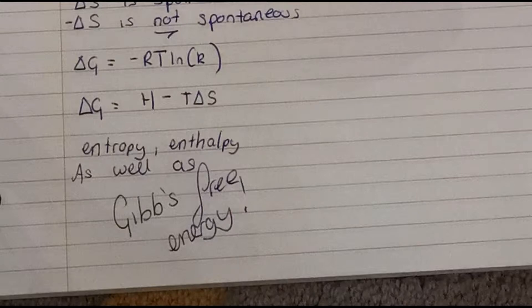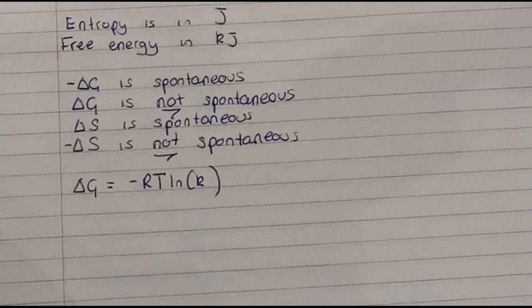Entropy is in J, free energy JK. Minus delta G is non-spontaneous, entropy is in J, delta S is spontaneous, minus delta S is spontaneous.